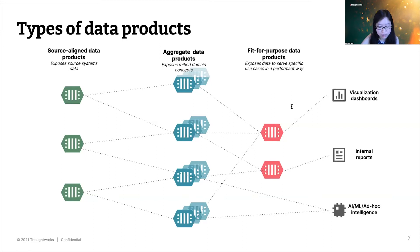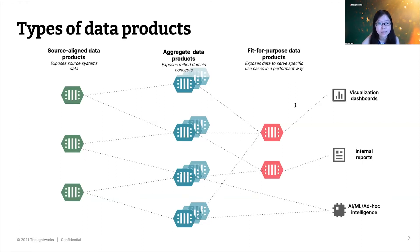There's a common misconception that data in the data mesh ecosystem should flow linearly — from a source-aligned data product to an aggregate, then to a fit-for-purpose data product. But there's no rule that says that. Any of these products are consumable directly in their own right; it just depends on what kind of transformation you need. Because they're all products in their own right, the teams responsible for them are product teams — responsible for the quality of the data they expose, not just to simply expose the data.